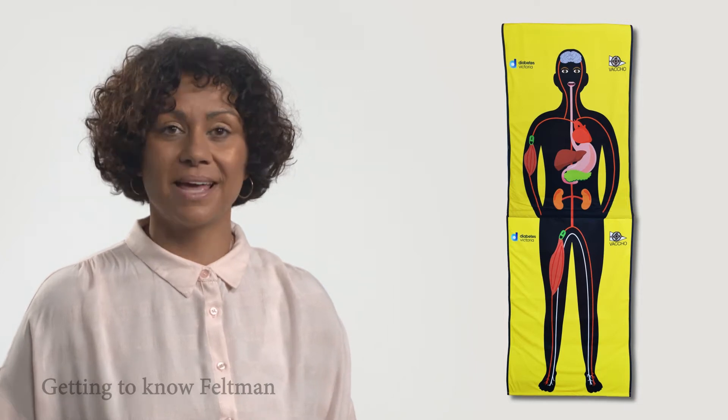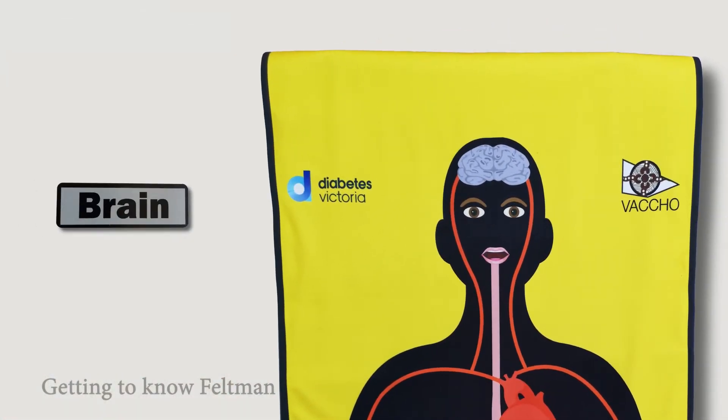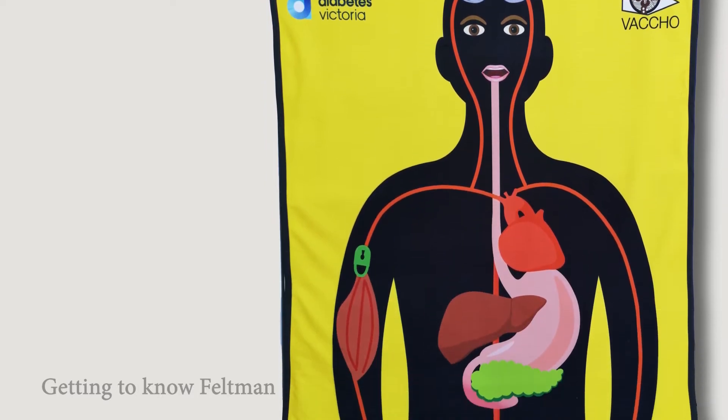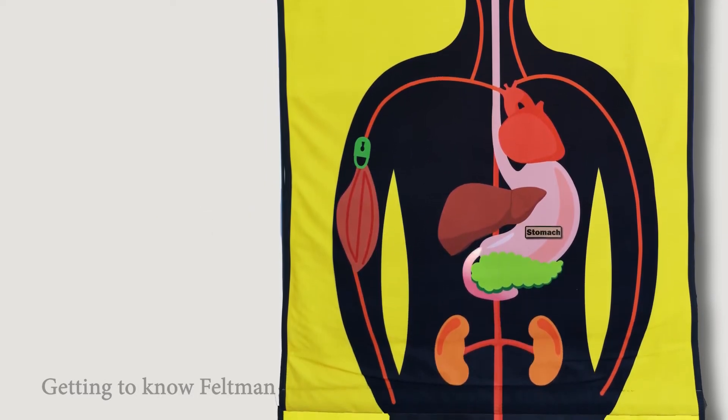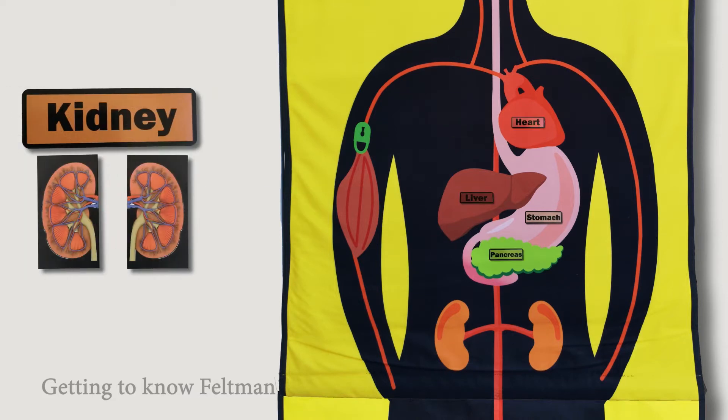First let's use Feltman to identify the organs of the body: the brain, the esophagus or food tube going down into the stomach, the intestines, the heart, the liver, the pancreas and the two kidneys.